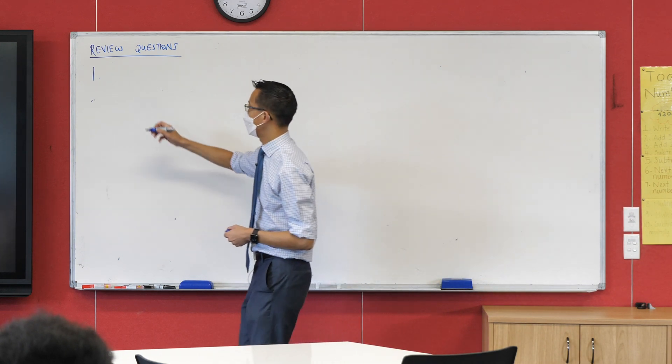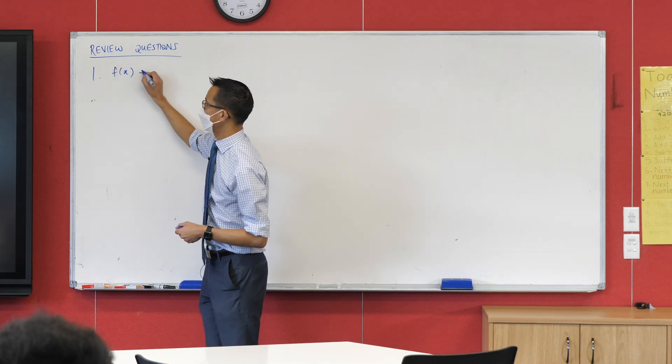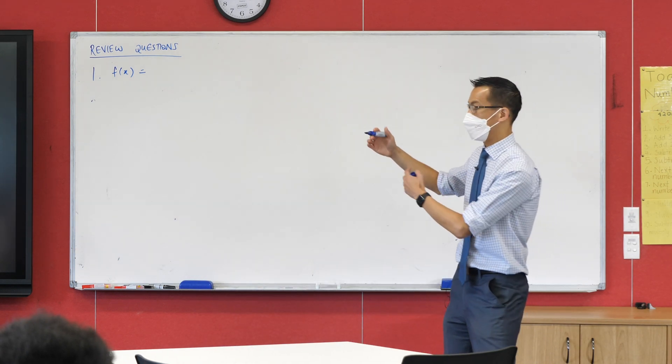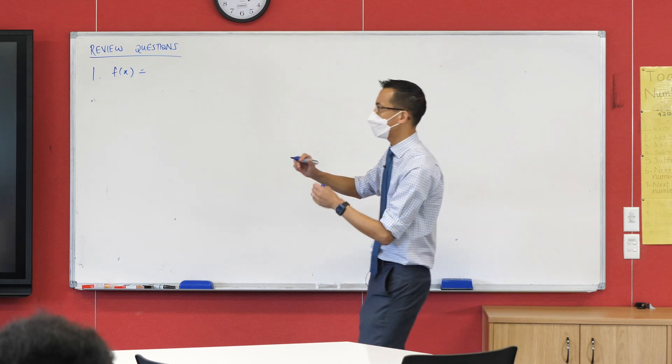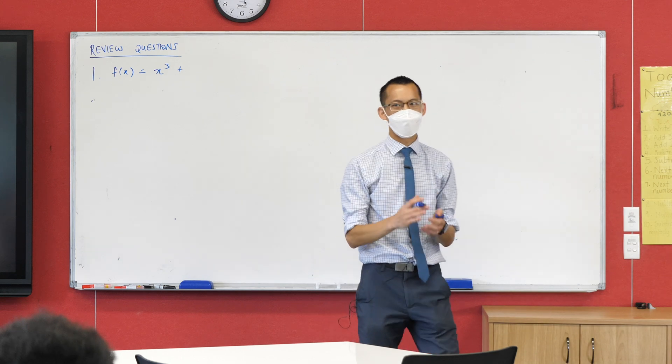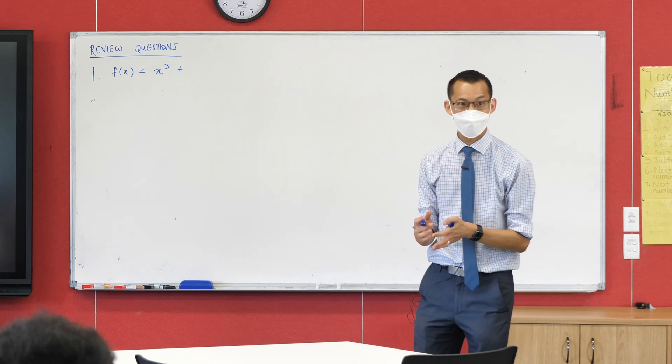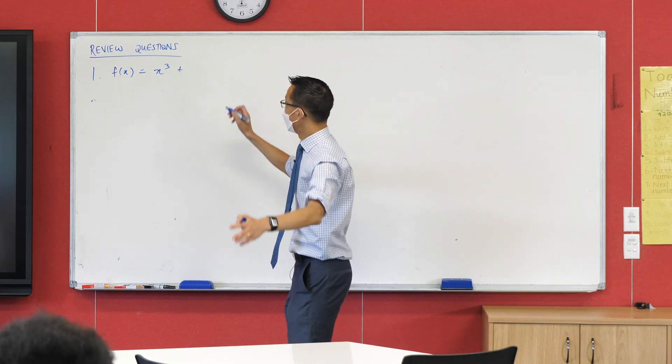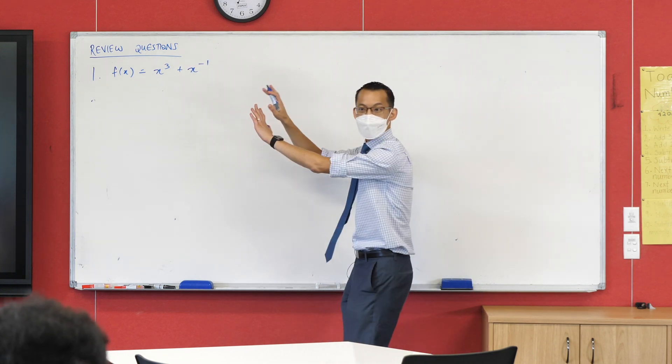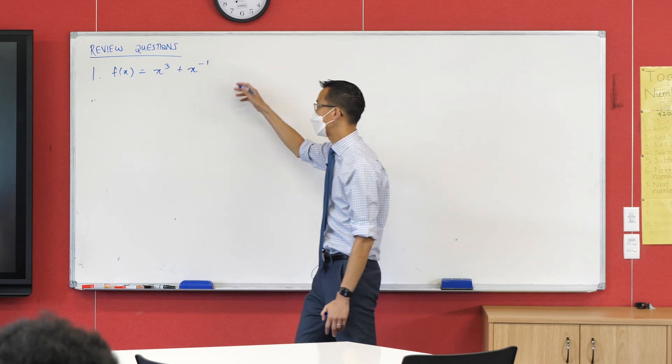Let's have a look at question one. The first thing before we get to f dash x is you probably want to reframe the original f of x. You want to write it slightly differently. The x cubed is fine, but how might you write one over x in a more helpful way? X to the power of negative one. Fantastic.